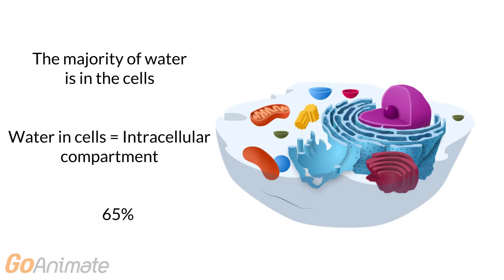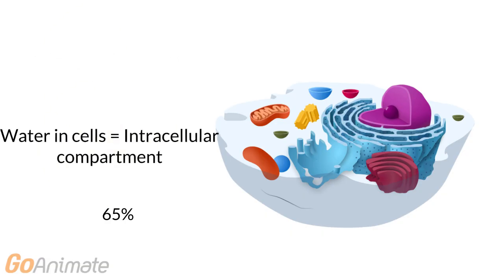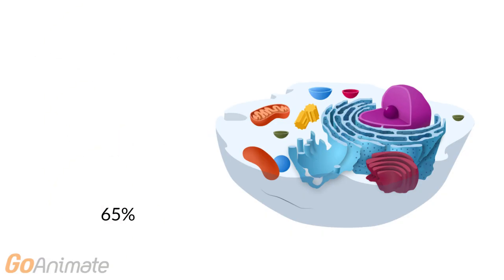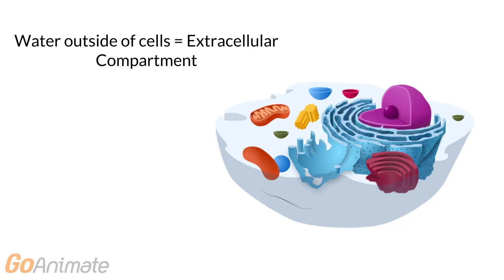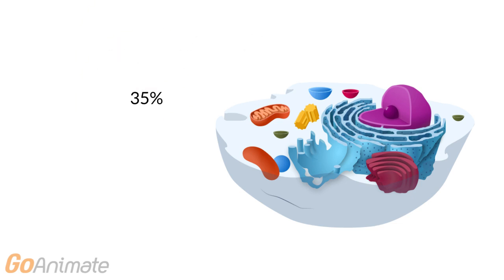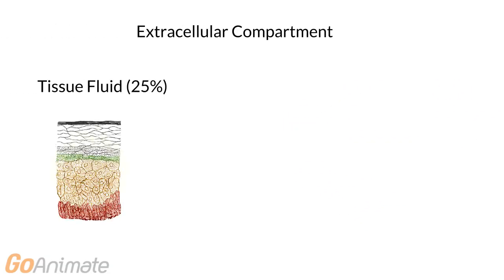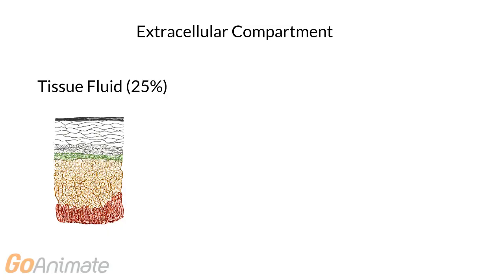The majority of water is located in the cells. This is known as the intracellular compartment, and holds about 65% of the total water in the body. Water located outside of the cells occupies the extracellular compartment, which holds the remaining 35%. The extracellular compartment consists of several sub-compartments.